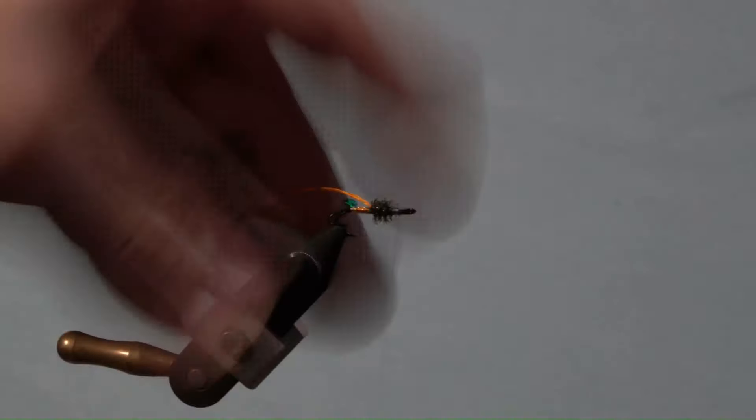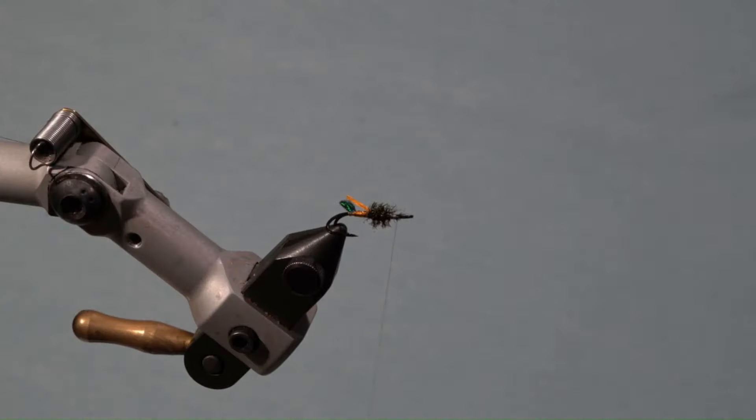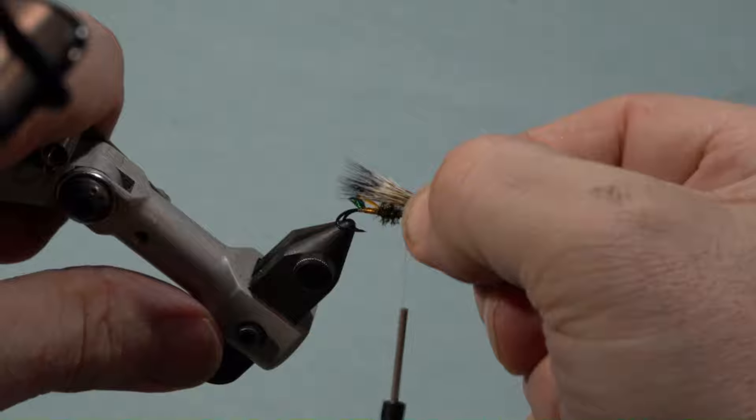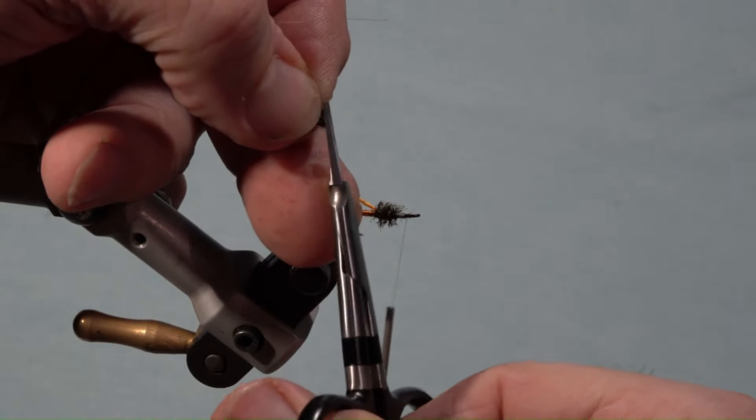Trim the veil shorter than the tail. Next, prepare the gray fox fur. Remove the underfur, stack the tips evenly, and measure the length. This wing will be slightly past the bend of the hook.